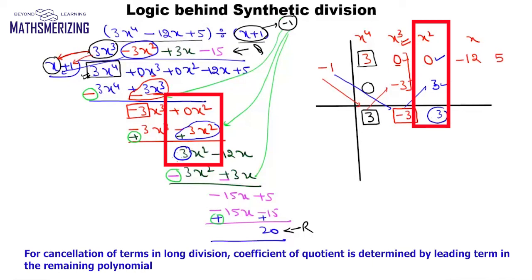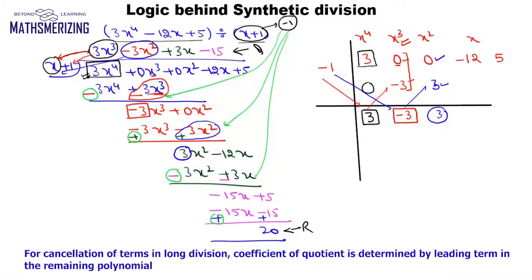That 3 is my next leading coefficient to eliminate, so it becomes another coefficient in the quotient. Again I multiply 3 with minus 1 to get minus 3, and adding them up gives minus 15 by the same logic. Finally, multiplying minus 1 with minus 15 gives 15, so the remainder is 20.